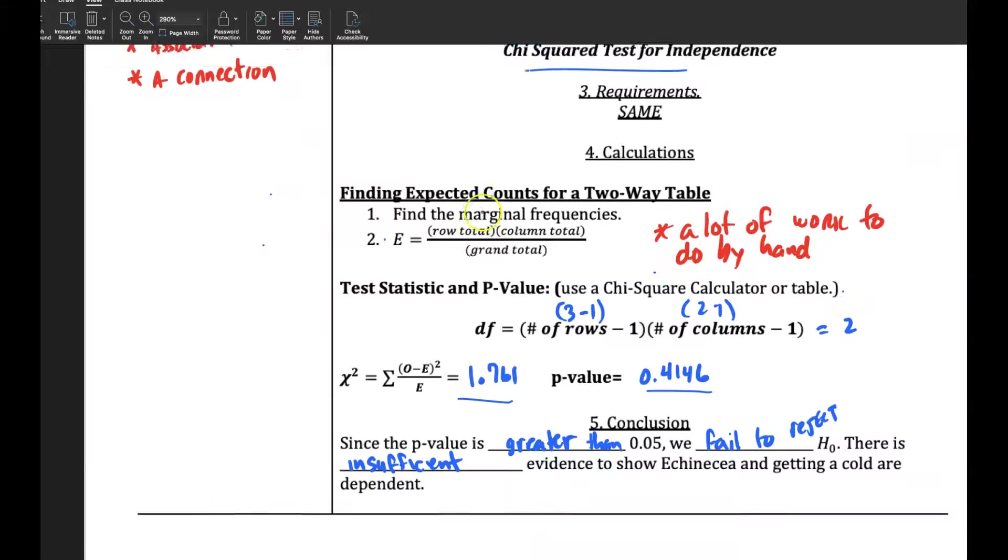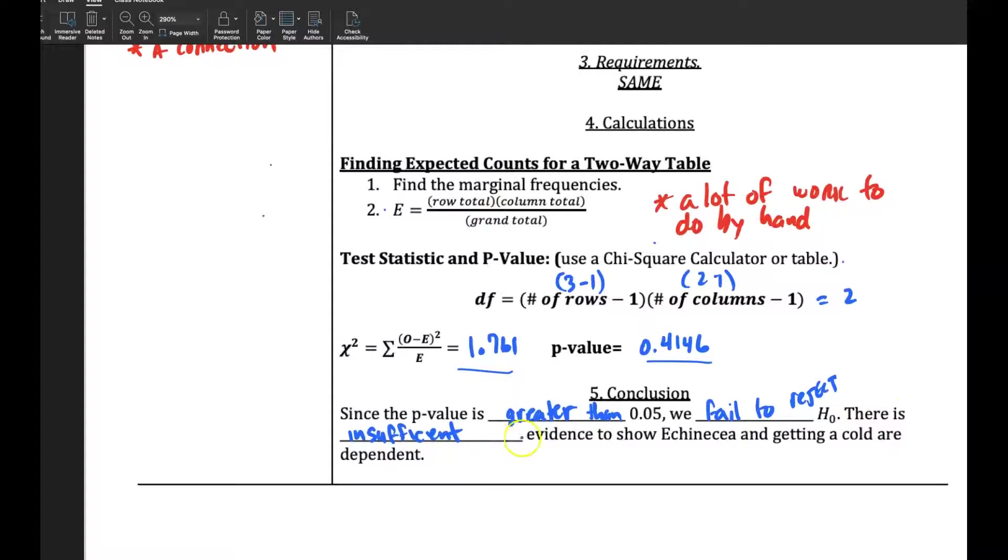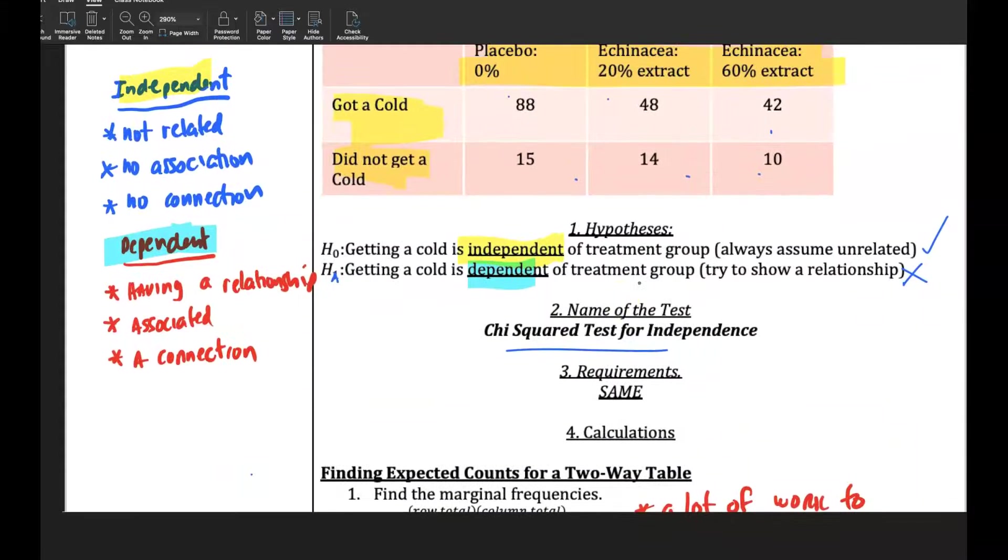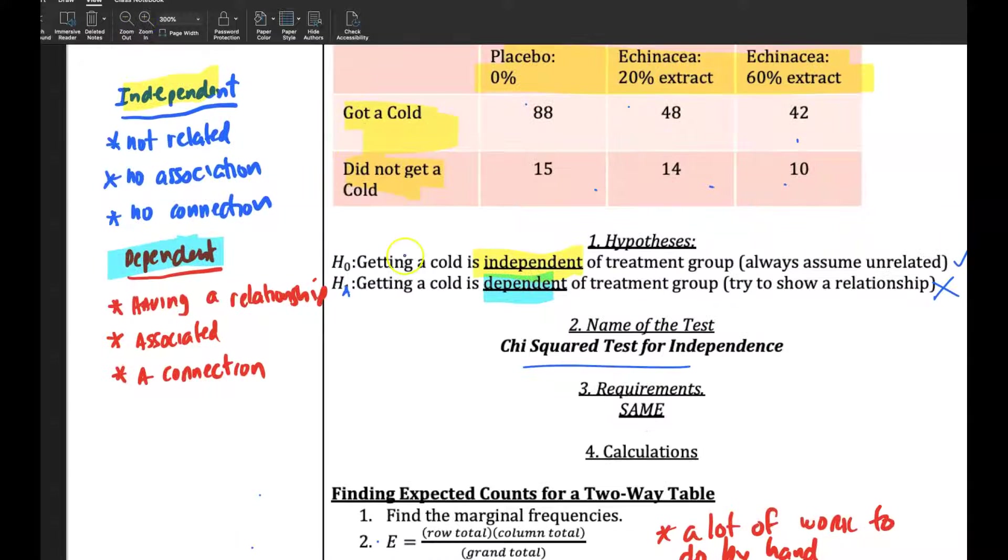And so since we fail to reject it, there is insufficient evidence to show the drug echinacea and getting a cold are dependent, meaning that doesn't look like that has an effect on it. That drug doesn't look like it's working there. And so that's how we run a test for independence.